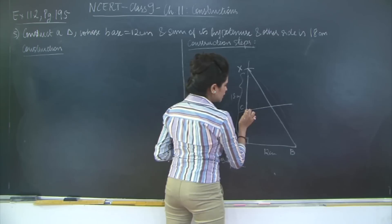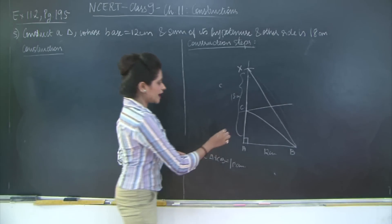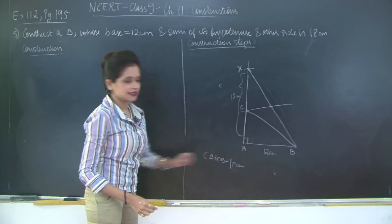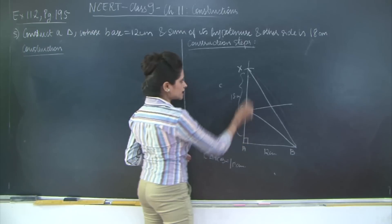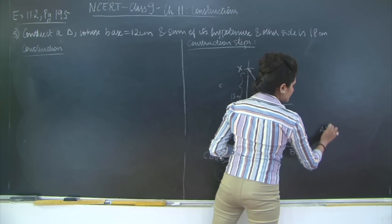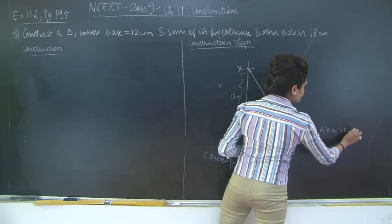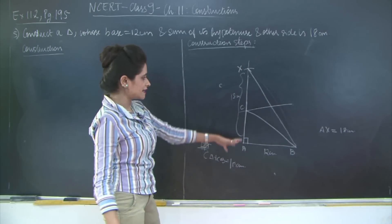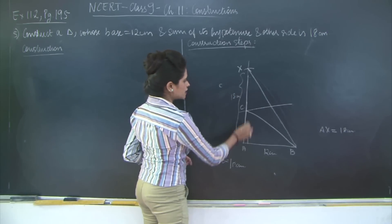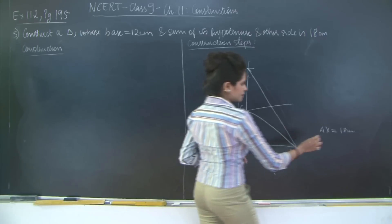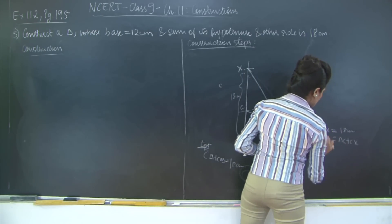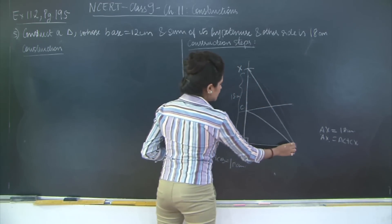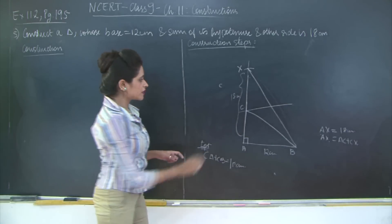I'm going to join C to B. Now we need to prove that CA plus CB is equal to 18 centimeters. According to the construction, AX is equal to 18 centimeters. But AX is made up of AC plus CX.